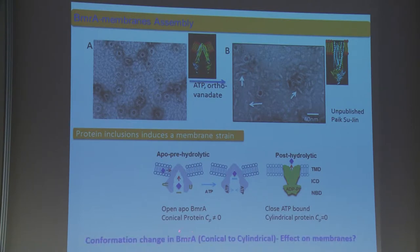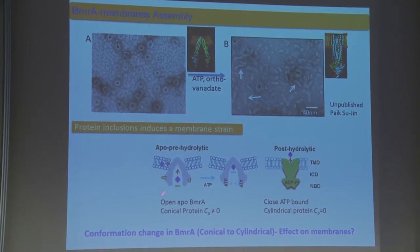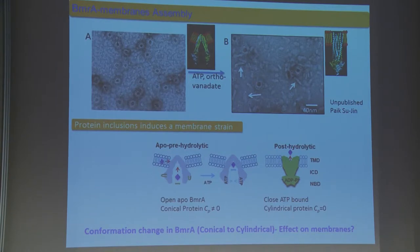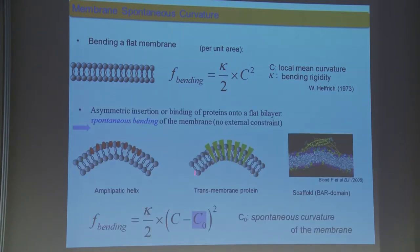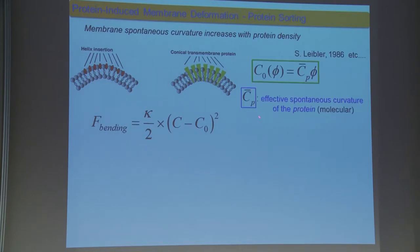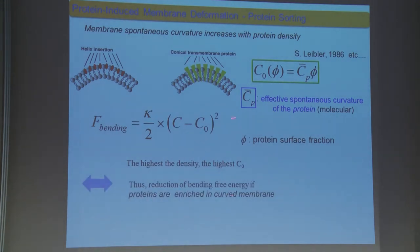A bit about the physics. For a flat membrane, you can define the bending of the membrane. When you have insertion of protein, this spontaneous curvature induced by the protein comes into play, and this bending energy you can reduce. The effective spontaneous curvature of protein drives the recruitment of the protein in the curved surface to minimize the bending energy of the membrane. That's how curved proteins try to enrich into curved membranes, driving membrane curvature-dependent protein sorting of curved molecules like conical transmembrane proteins or helical insertions.